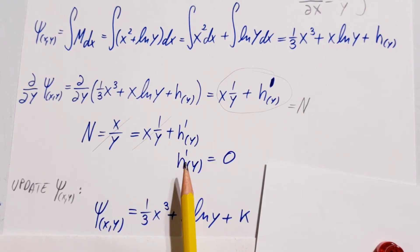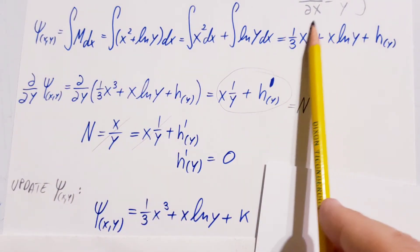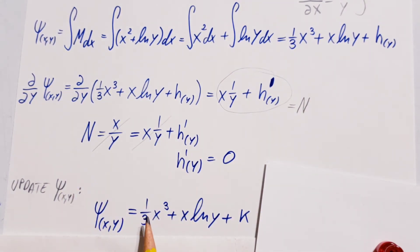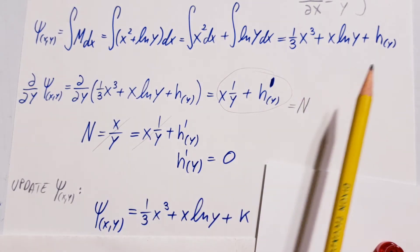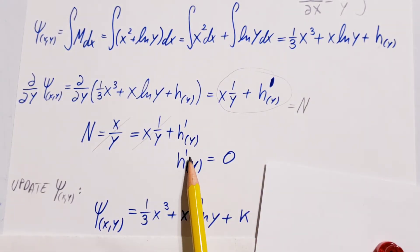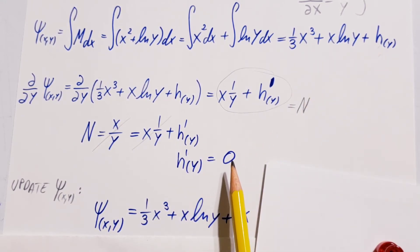Now, since we determined this, we're able to come back to this function of what we found here and update it. We're going to update it because we determined this, and we can replace this guy. Now, this is the derivative of this, and of what can we take the derivative of in order to get a 0? Of a constant, right? That's why I put a k here.